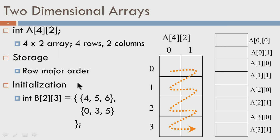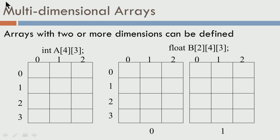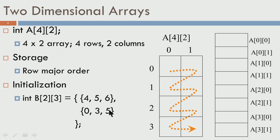You can initialize 2D arrays as you did for 1D arrays. For example, here we have a 2D array called b which has two rows and three columns. The outer set of braces indicates the array, and within it you have two sets of curly braces with lists of values. The 0th row will contain 4, 5, and 6, and the 1st row will contain 0, 3, and 5. The entries are again laid out in row major order.